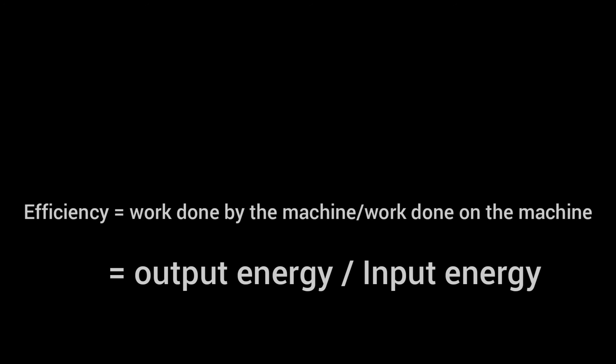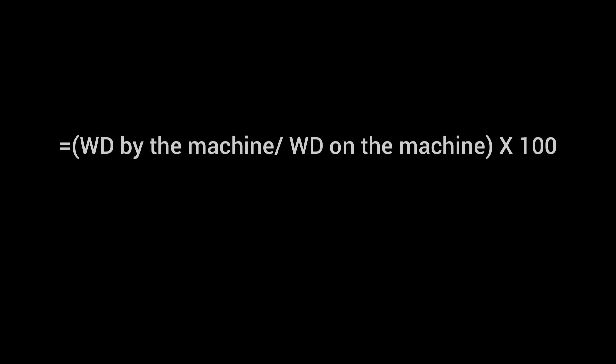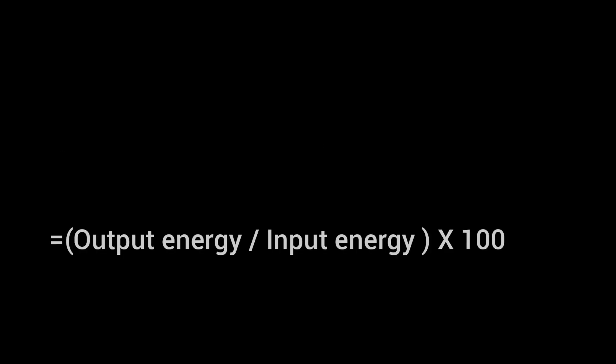Efficiency is generally expressed in percentage. If a machine is 80% efficient, it means that out of the total energy supplied to the machine, only 80% is utilized as useful work output. That is, efficiency in percentage is equal to work done by the machine divided by work done on the machine, multiplied by 100. Or we can write output energy divided by input energy multiplied by 100.